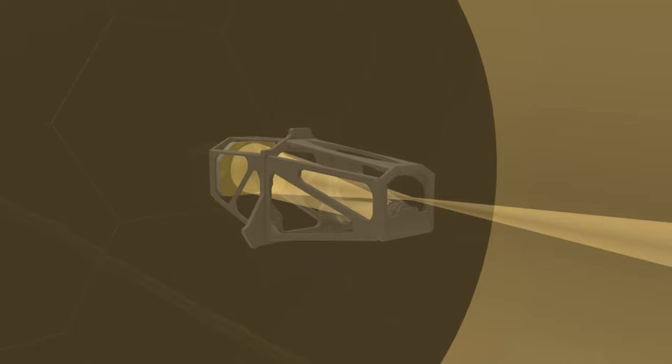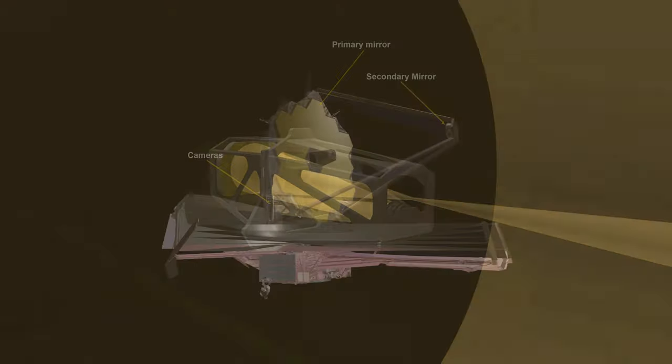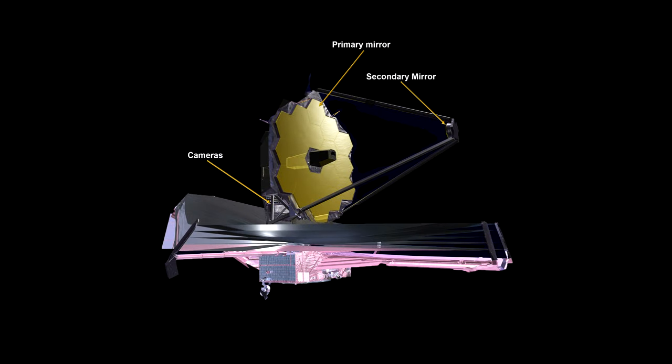Webb's mirrors are covered in a microscopically thin layer of gold, which optimizes them for reflecting infrared light. Other key components include the cameras, the sunshield, the solar panels, communications antennae, the computer, and spacecraft control.